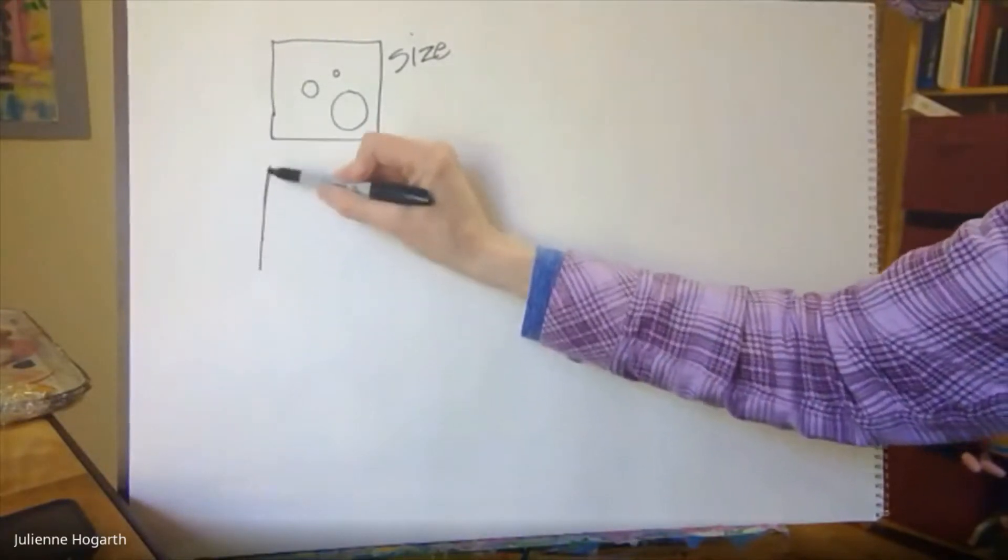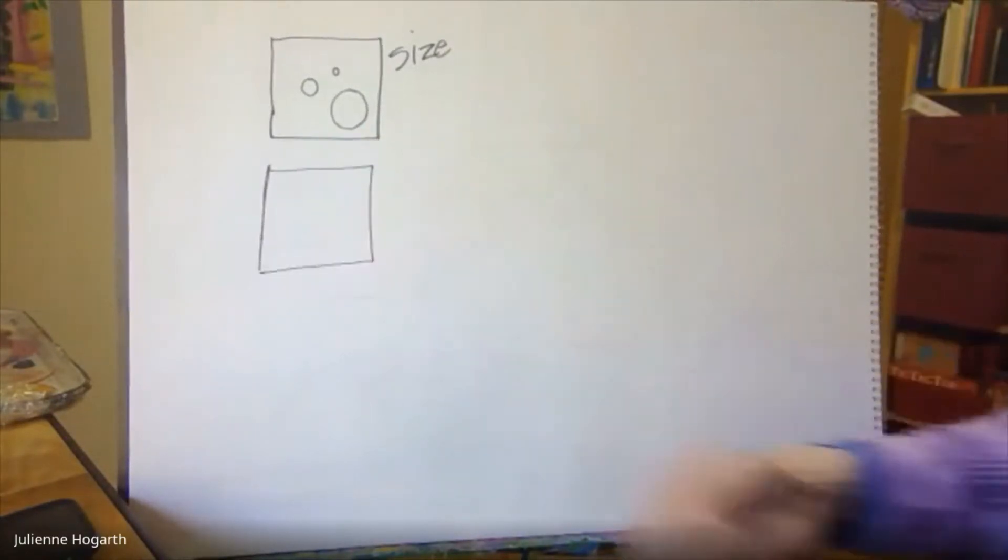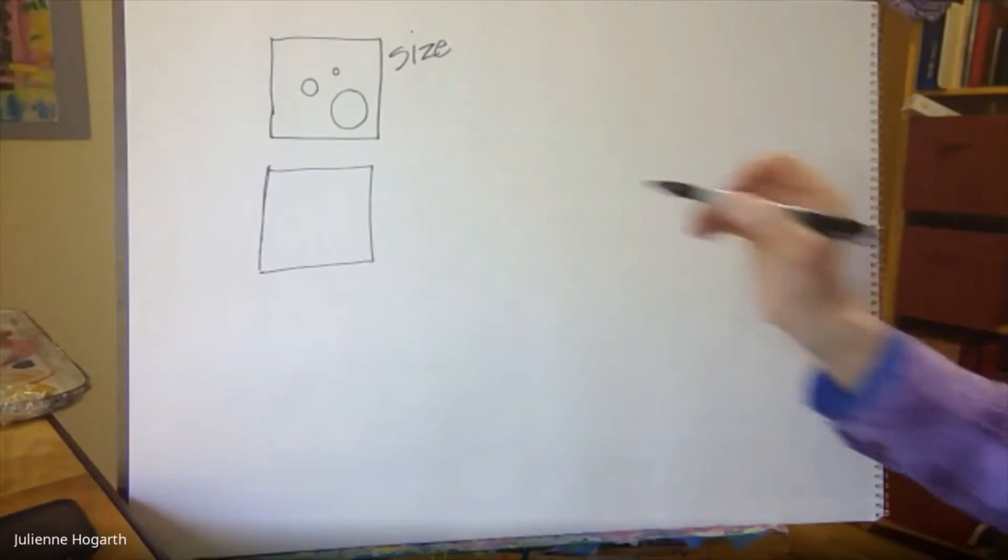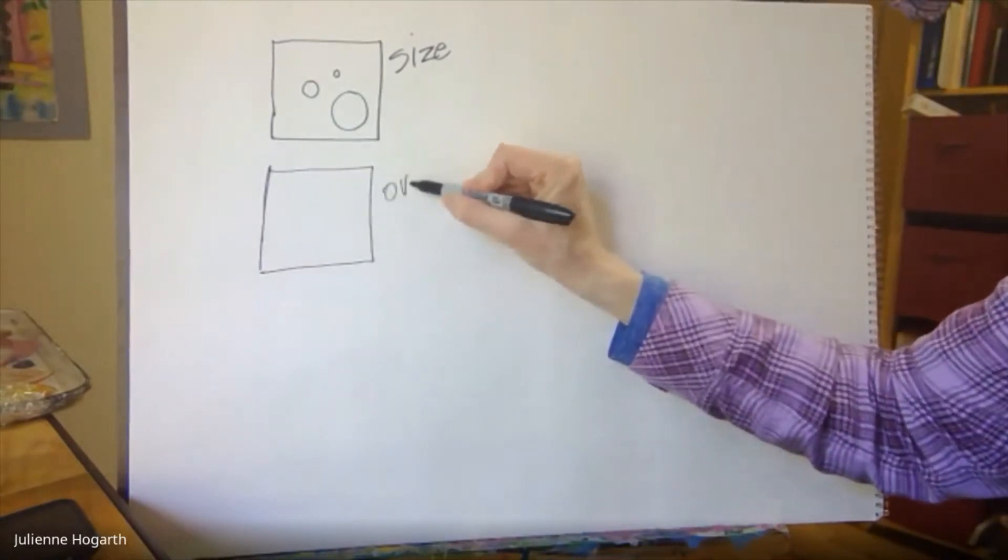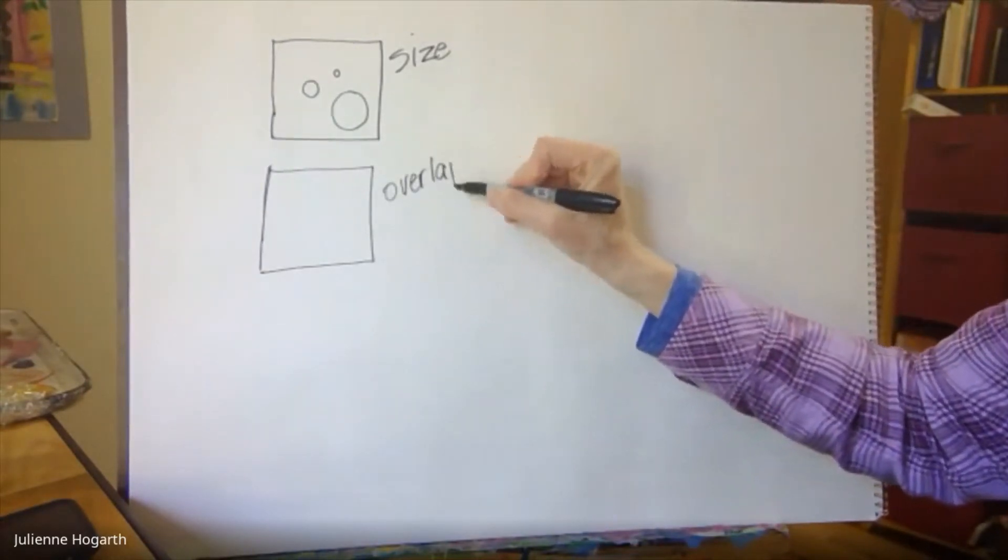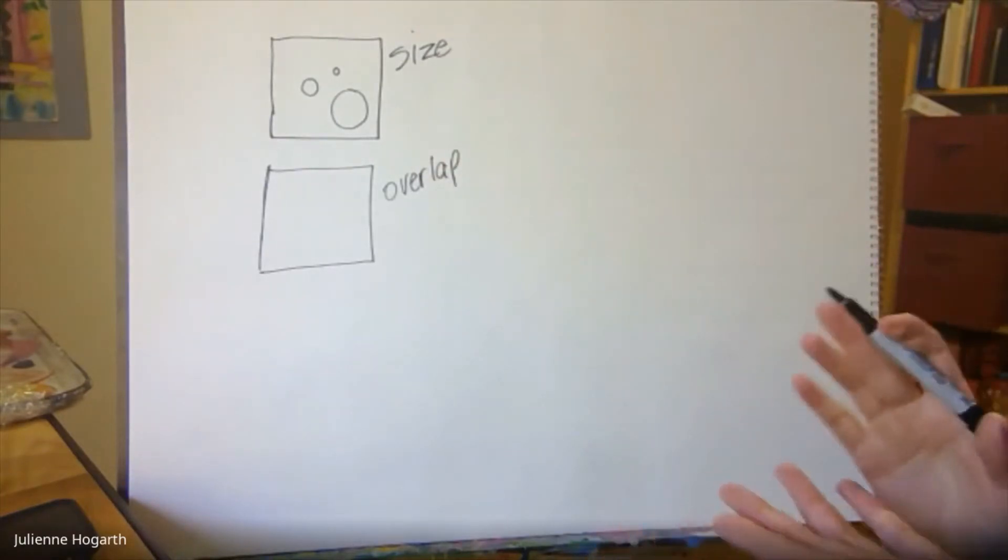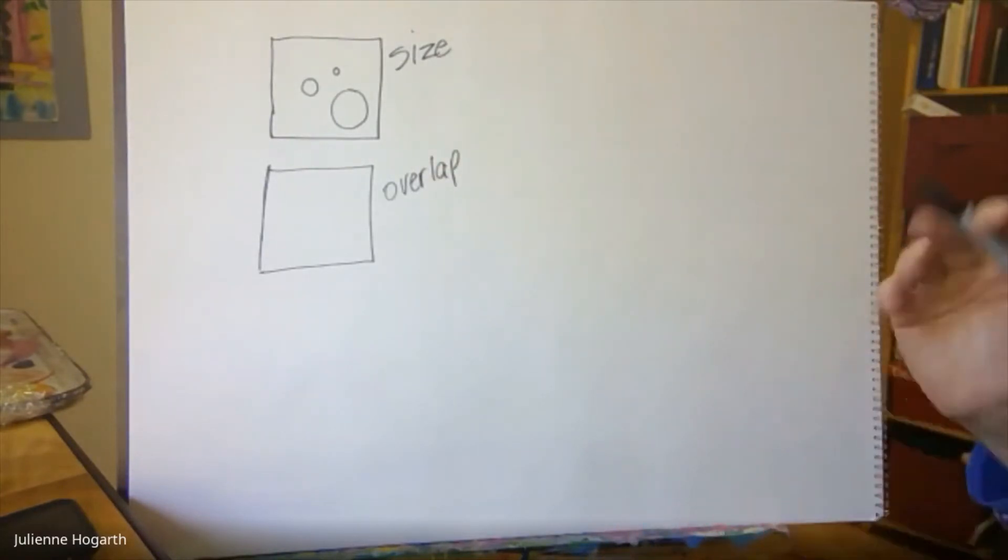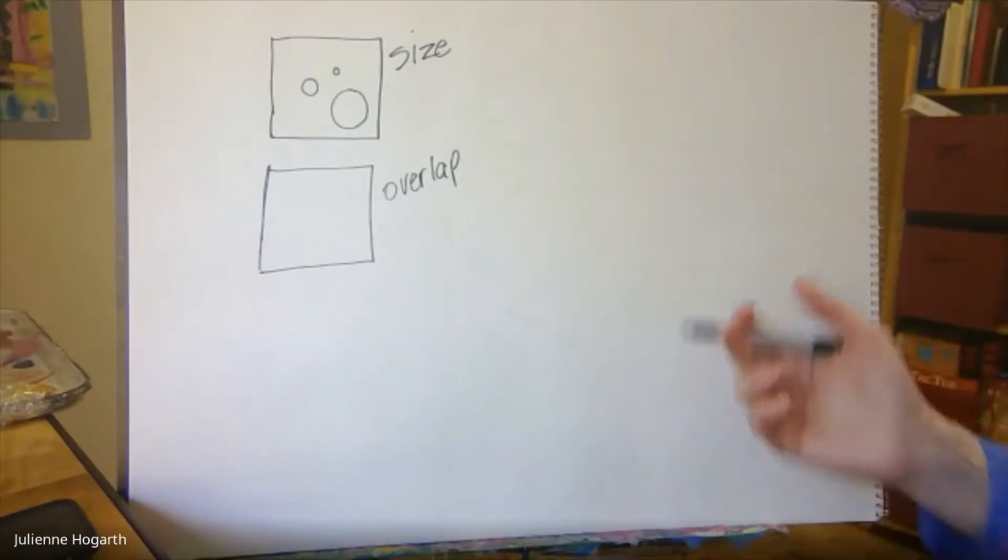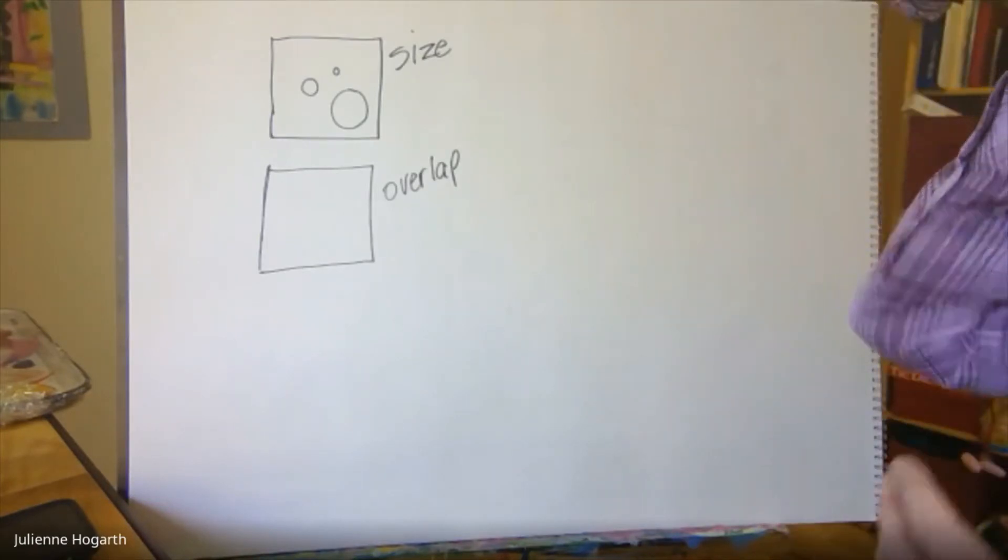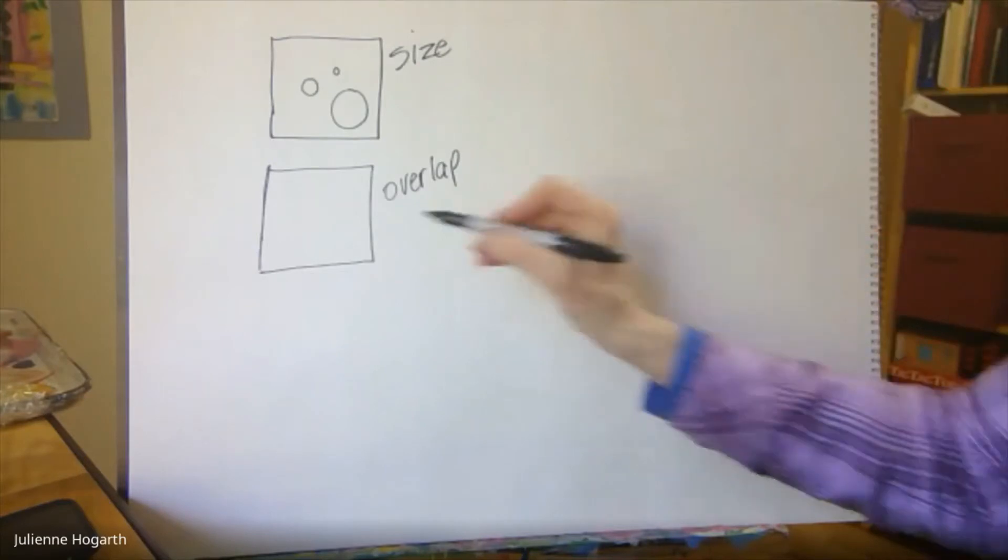Okay another way that artists do this and we're going to put them all together here in a bit is overlap. Now all of this applies to a landscape but it also applies to a still life or a portrait because you always have a background on a portrait. So these are kind of hard and fast rules that are going to help you.